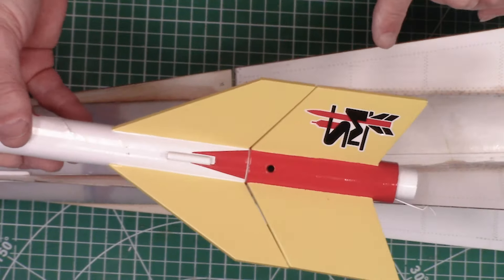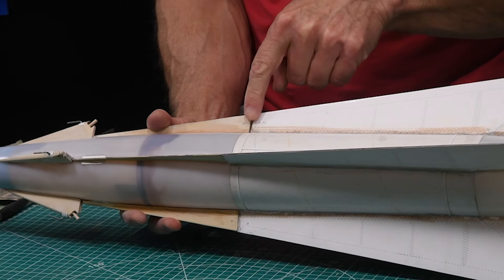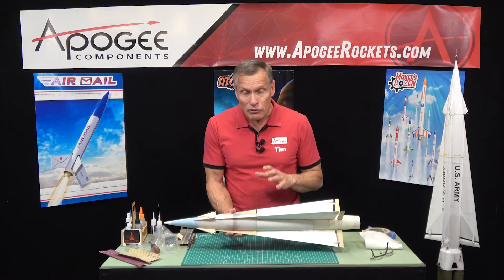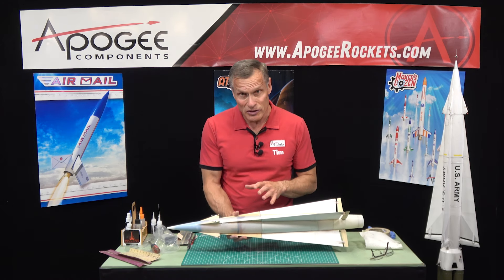Hi, I'm Tim Van Milligan from Apogee Components. I'm going to show you how to fix a gap between two fins. Now this rocket is the Nike Hercules and this is the upper stage. I've got this gap right here between these two fins and I want to fill it. So the first thing you have to do in this situation is determine what side of the fin is causing the problem. And it might be both, and in this case it is both. I can tell it's both because this right here is not flush with the edge of the tube.